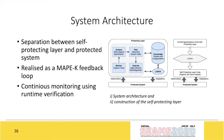The system architecture achieves separation of concerns by separating the protected system from the self-protecting layer. The protecting layer is realized as a Monitor-Analyze-Plan-Execute (MAPE) feedback loop with a knowledge component, and we continuously monitor the system using runtime verification. The runtime verification specification is a formal specification compiled by the LAVA runtime verification framework into aspects and Java classes, allowing us to run the protecting layer at runtime.